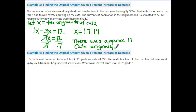So this problem is a little bit different. While it involves the idea of percent increase or decrease, we're not really using the formula. We're just walking through the process of how they would have come up with the final results and then solving for the unknown. Example four, finding the original amount given a percent increase or decrease. Lou's math level on her achievement test in seventh grade was a level of 650. Her math teacher told her that her test level went up by twenty five percent from her sixth grade test score level. What was Lou's score level in sixth grade? So notice the unknown here in this situation is her sixth grade score. So let's let X equal Lou's sixth grade score.